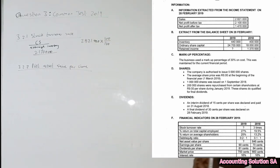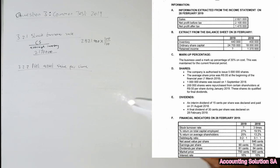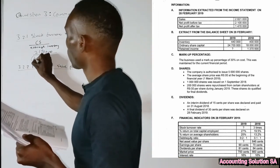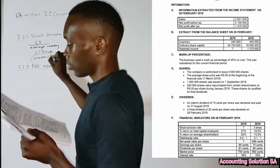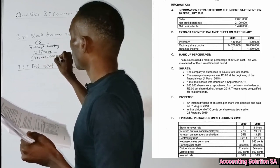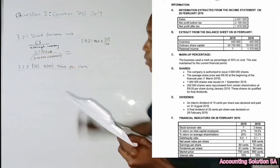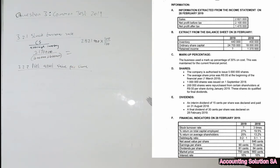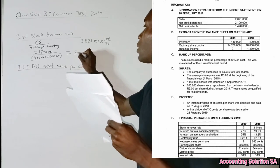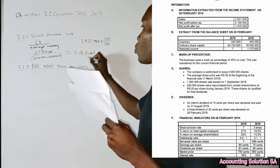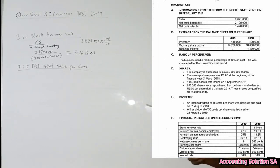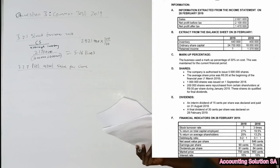Now we need average inventory. Average simply means we take opening inventory plus closing inventory and divide by two. Opening inventory was four hundred thousand and closing was four hundred and forty thousand, giving an average of four hundred and twenty thousand. So: two million, one hundred and seventy thousand divided by four hundred and twenty thousand equals 5.16 times — meaning inventory was purchased and sold approximately 5.16 times.